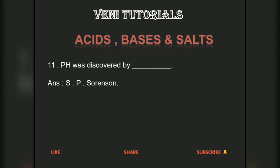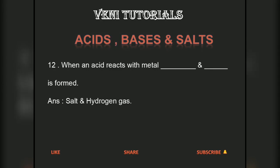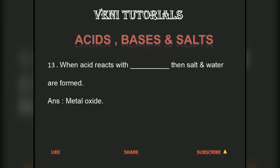pH stands for potential of hydrogen. pH was discovered by S.P. Sorenson. When an acid reacts with a metal, salt and hydrogen gas are formed. When acid reacts with metal oxide, salt and water are formed.